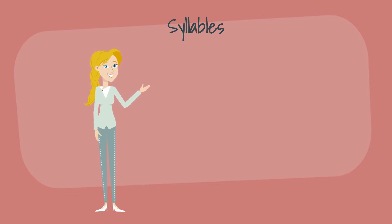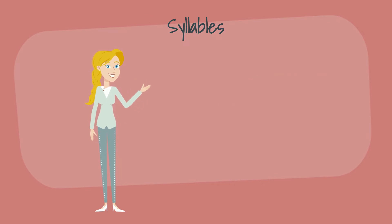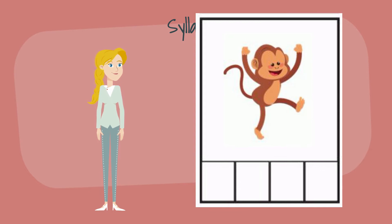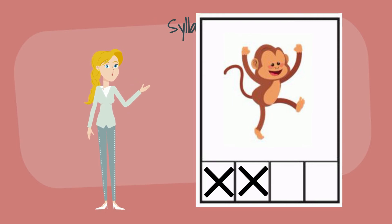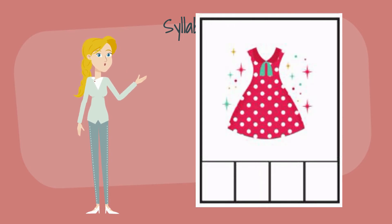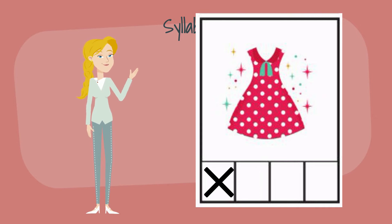Remember that syllables are sometimes referred to as the beat in words, so we are going to clap syllables in words now. We will record our claps as X's on the bottom of the paper. Let's try monkey. Monkey — let's clap the syllables. Monkey. There are two claps, so we'll put two X's to show there are two syllables in monkey. This time we will clap syllables in the word dress. Dress. There was only one syllable, so we only need one X.